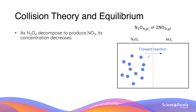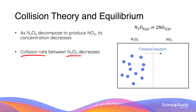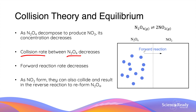In a closed system where we start with only N2O4, these molecules will decompose to produce NO2. As that happens, the concentration of N2O4 decreases, which results in a decrease in collision rate between these molecules. So the forward reaction rate decreases due to the reduced collision rate between N2O4 molecules. As N2O4 decreases, NO2 increases, and those NO2 molecules can collide to drive the reverse reaction, reforming N2O4.